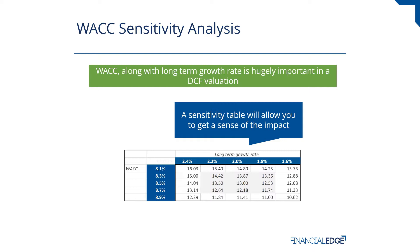Let's do the first one: we take the 8.1% WACC, put it into the model, and put the long-term growth rate of 2.4% into the model, and see what the share price is — and then record it here: 16.03. Now that would take an awful long time to put all of these combinations in manually and then write them down, but you can use the data table capability within Excel to do this for you.